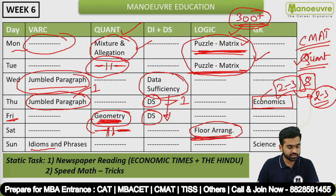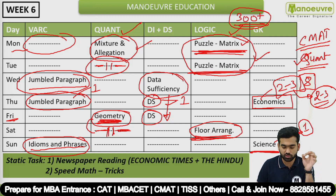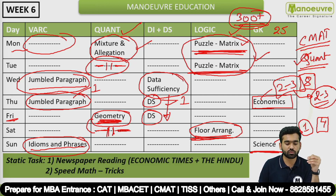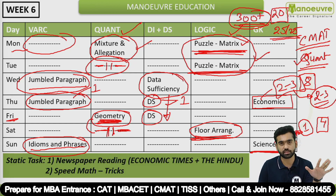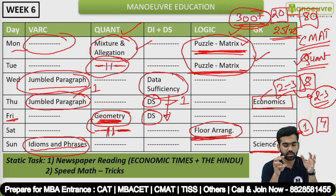Sunday is for VRC — idioms and phrases — and GK. You can also do Sentence Analysis. We can expect the same pattern this year as well. Since one question carries four marks, target at least 22 to 25 questions in GK. If you solve 20 GK questions, that confirms 80 marks, so GK and Quant are the most important sections.